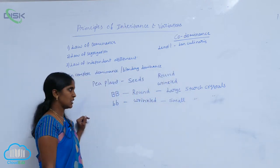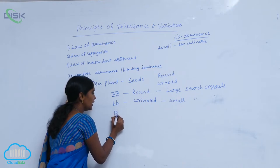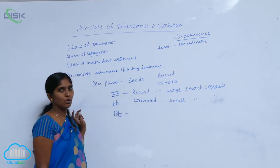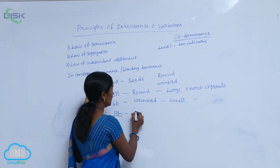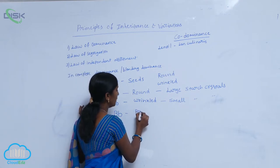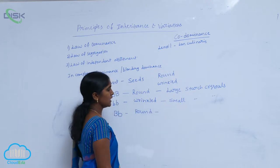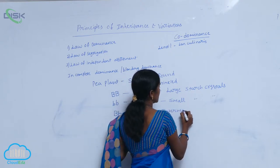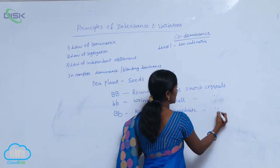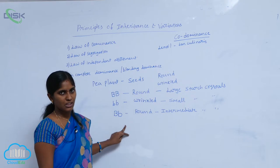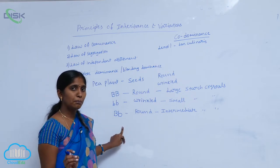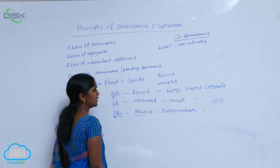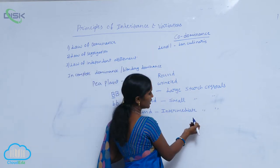When the heterozygous form — that is the F1 hybrid, capital B small b — it gives the round seed only. But the starch crystals released from the seed are intermediate in size. So this is also one example of incomplete dominance. In the presence of capital B, it shows the round seed shape, but the starch crystals show an intermediate difference.